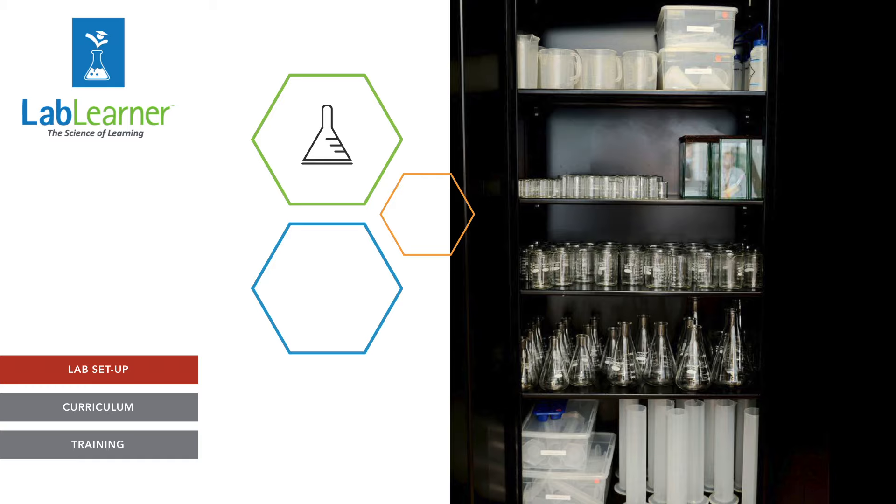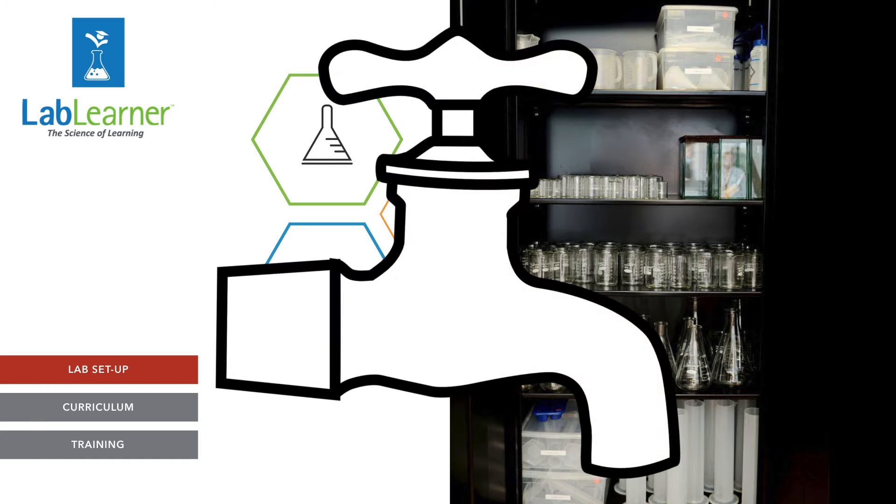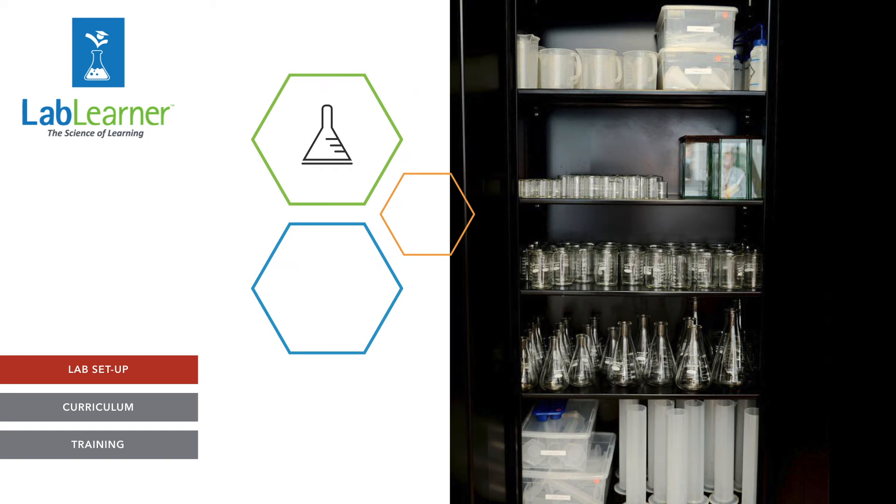The second component would be ideally you're going to have access to water. So in a perfect situation, you might have a utility sink in that classroom or perhaps you pick a room that already has a sink in it. Alternatively, you might want to locate your classroom next to a bathroom or perhaps a janitor's closet where you have access to water.